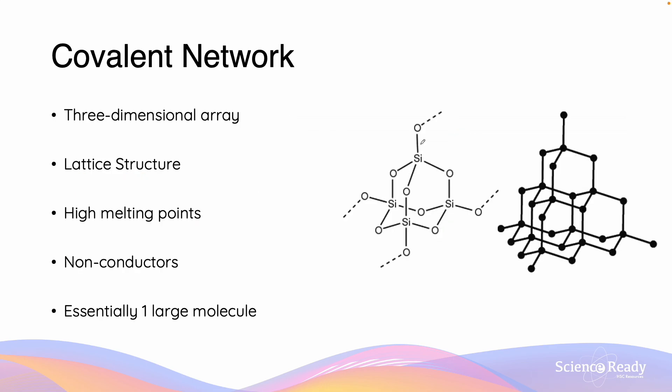The next type of structure is the covalent network structure. They also have this three-dimensional array or lattice structure which resembles that of the ionic compound. Now we can attribute the strength of the covalent network substances such as their high melting points, non-conductivity and strength to this lattice structure.